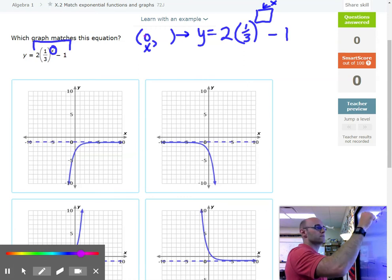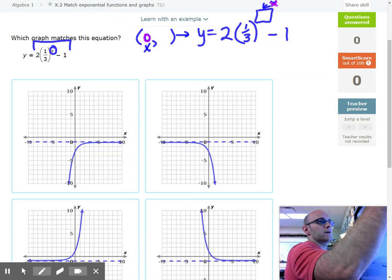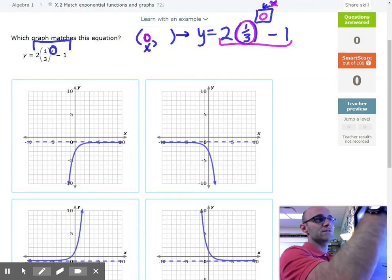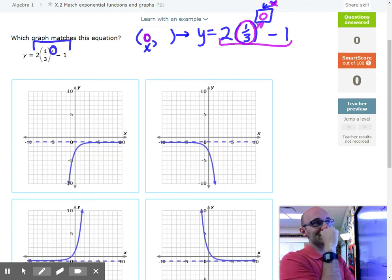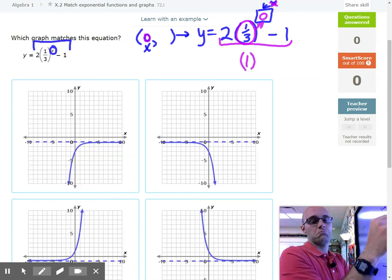So why don't we plug in our X value and see what we get? So our X value here, use a little bit of purple. Plug in where X is. We're going to plug in zero and say, okay, what would this side of the equation turn into? First off, any number to the zero power, we have to do our exponents first here.